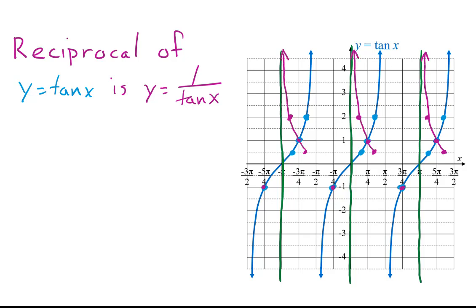On the lower part of tangent, we find points with y equals negative 1 half. 1 over that is negative 2, which gives points on the reciprocal. When tangent has y equals negative 2, the reciprocal has y equals negative 1 half. We can sketch curves through these points approaching the asymptotes. Finally, we consider the points where tangent is not defined, such as at x equals pi over 2. To the left of pi over 2, tangent is positive, so the reciprocal is also positive. Tangent is approaching infinity, so 1 over that is approaching 0 from the positive side — very small positive numbers.